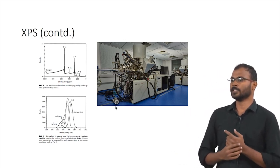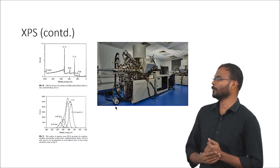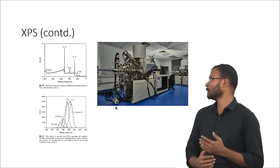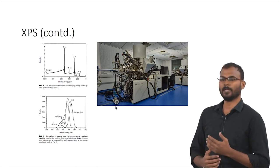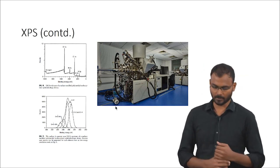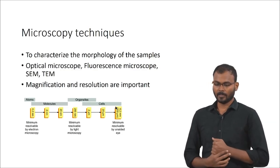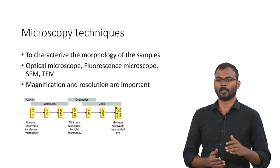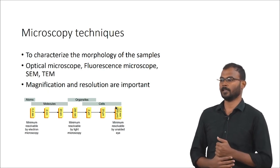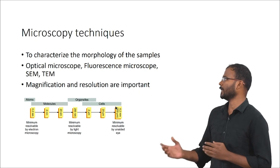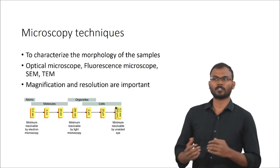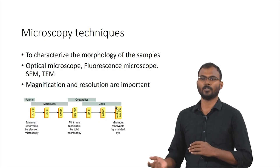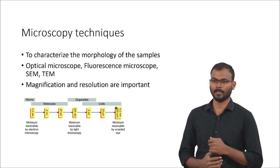One disadvantage of XPS is that the sample must be analyzed under high vacuum conditions, so if your sample is not stable in high vacuum it is difficult to use XPS. Microscopic techniques also come under surface characterization but have wide applications — a fluorescent microscope can observe organelles and nucleus inside cells, and TEM looks inside the material surface itself.